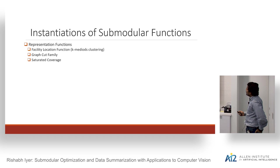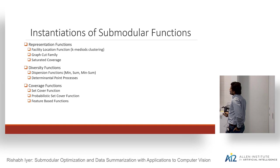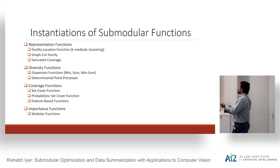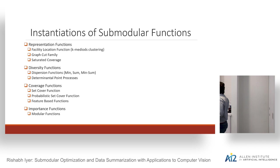We'll consider a family of functions: representation functions, diversity functions, coverage functions, and finally importance functions — which are scores for every element. These are called modular functions, which are essentially the linear analog in discrete space. The value of a set is just an additive sum of the elements in the set. We'll look at all of these families and argue about their modeling capability.